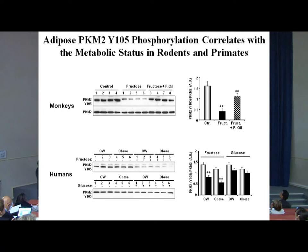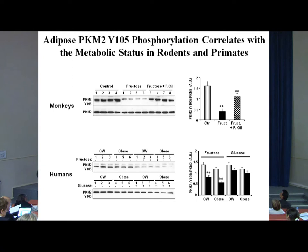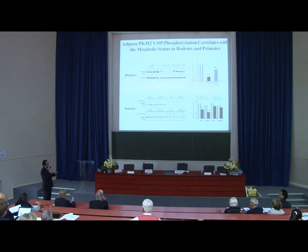We also conducted studies in humans at the CTSC at Davis. Overweight or obese human subjects were fed fructose or glucose for different time points, and we took subcutaneous fat biopsies and looked at phosphorylation of PKM2. It is clear that fructose feeding, which worsens metabolic status, leads to decreased phosphorylation of PKM2, but not in the case of glucose feeding. This shows that PKM2 is expressed in adipose tissue and its tyrosine phosphorylation is regulated in rodents, monkeys, and humans.